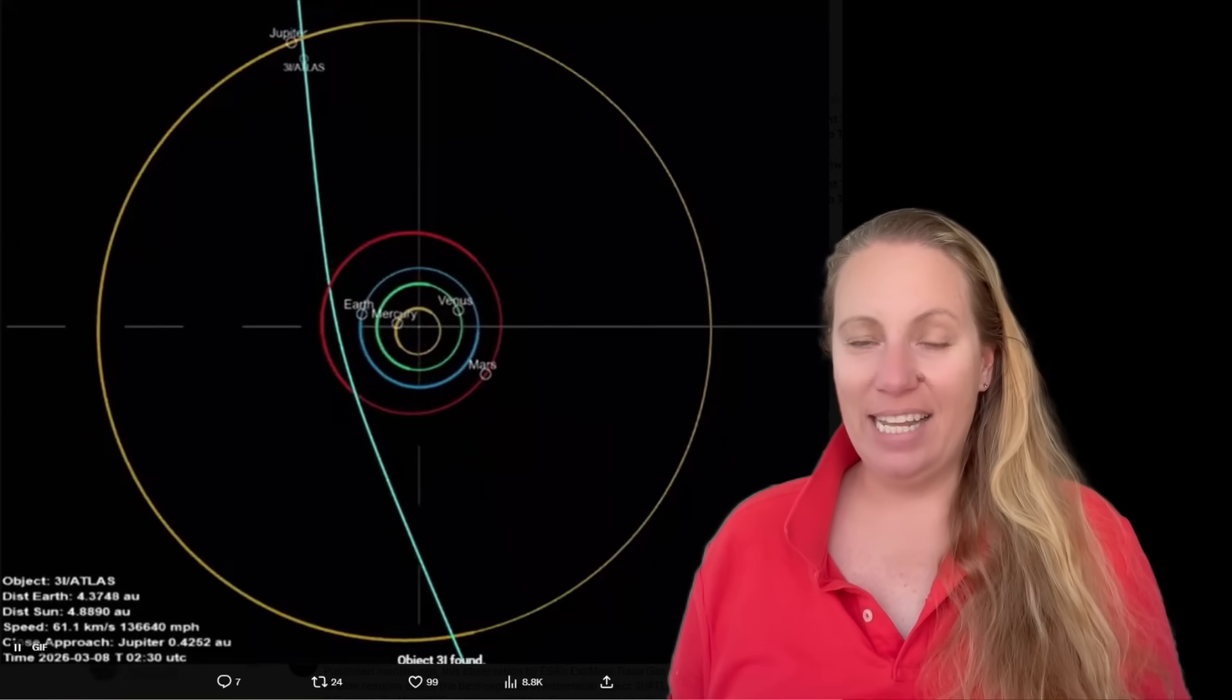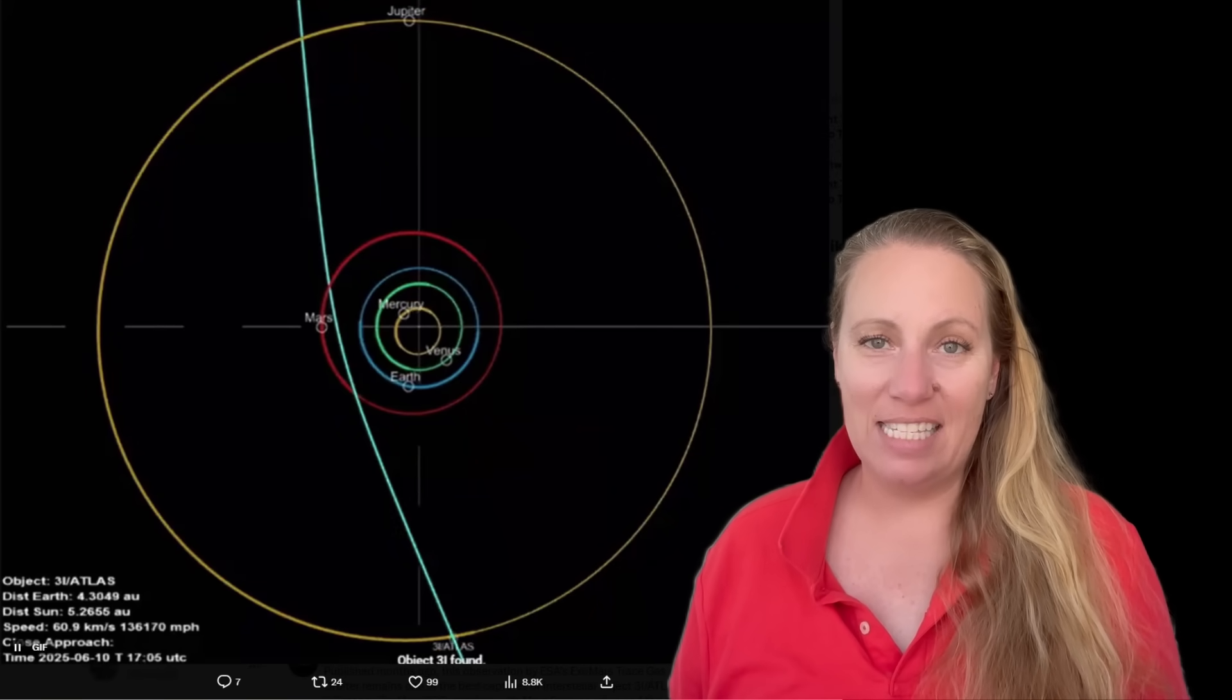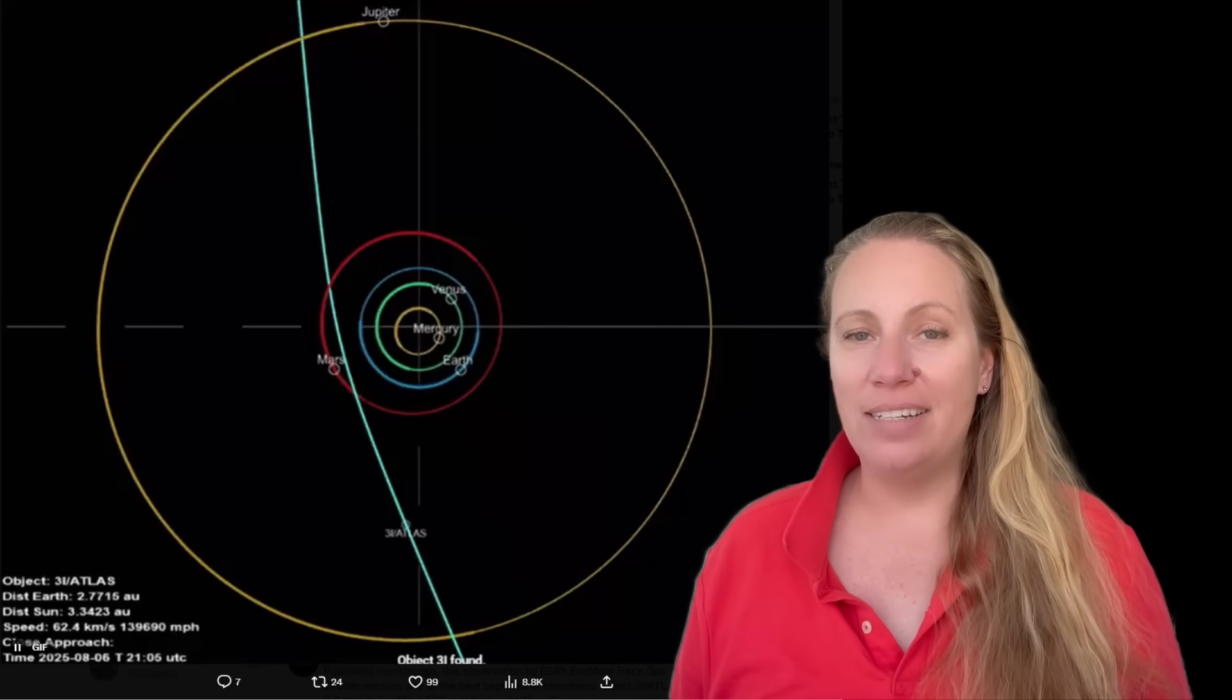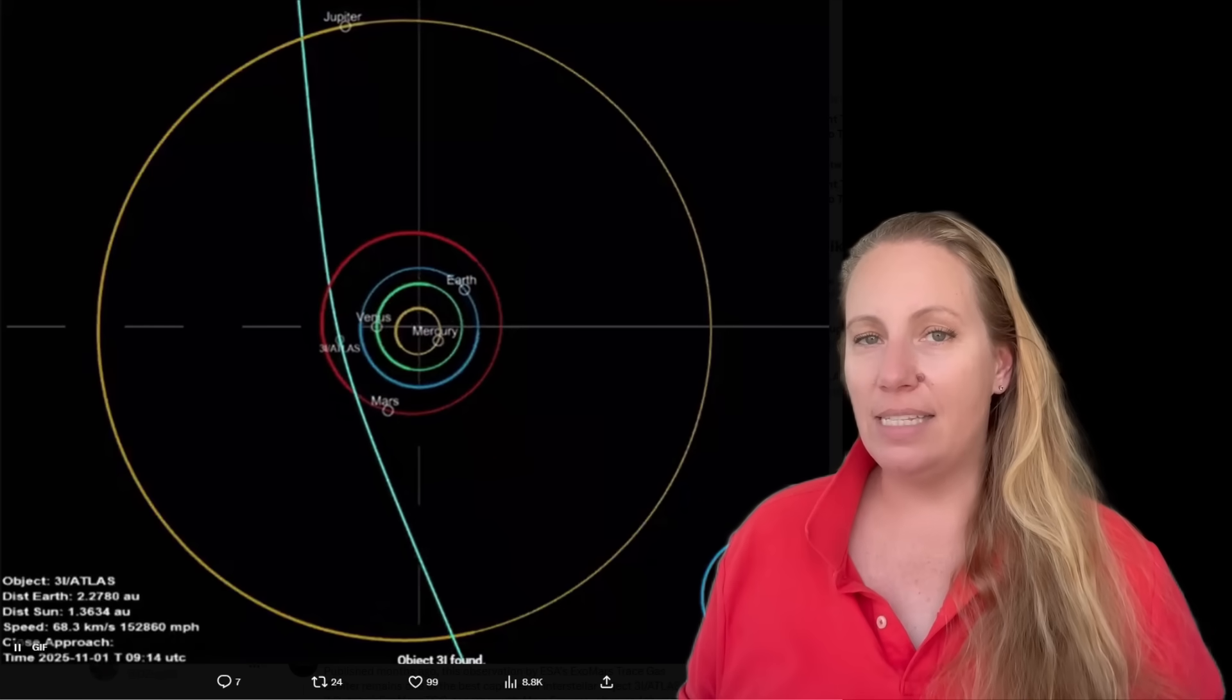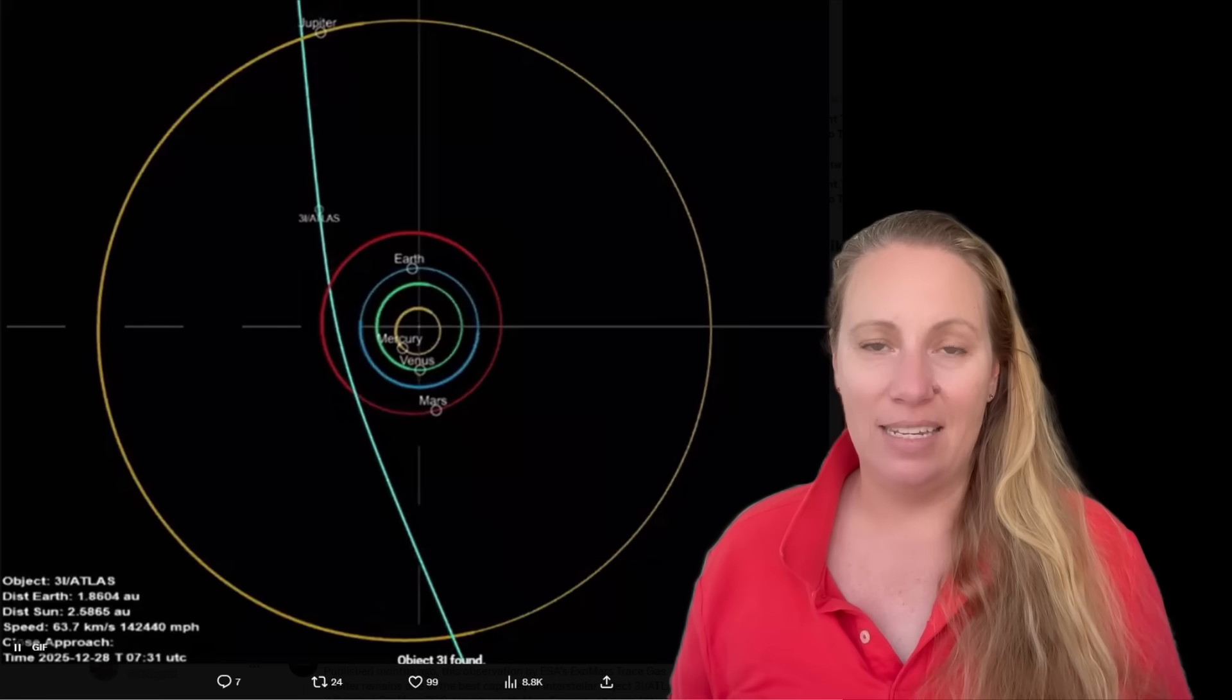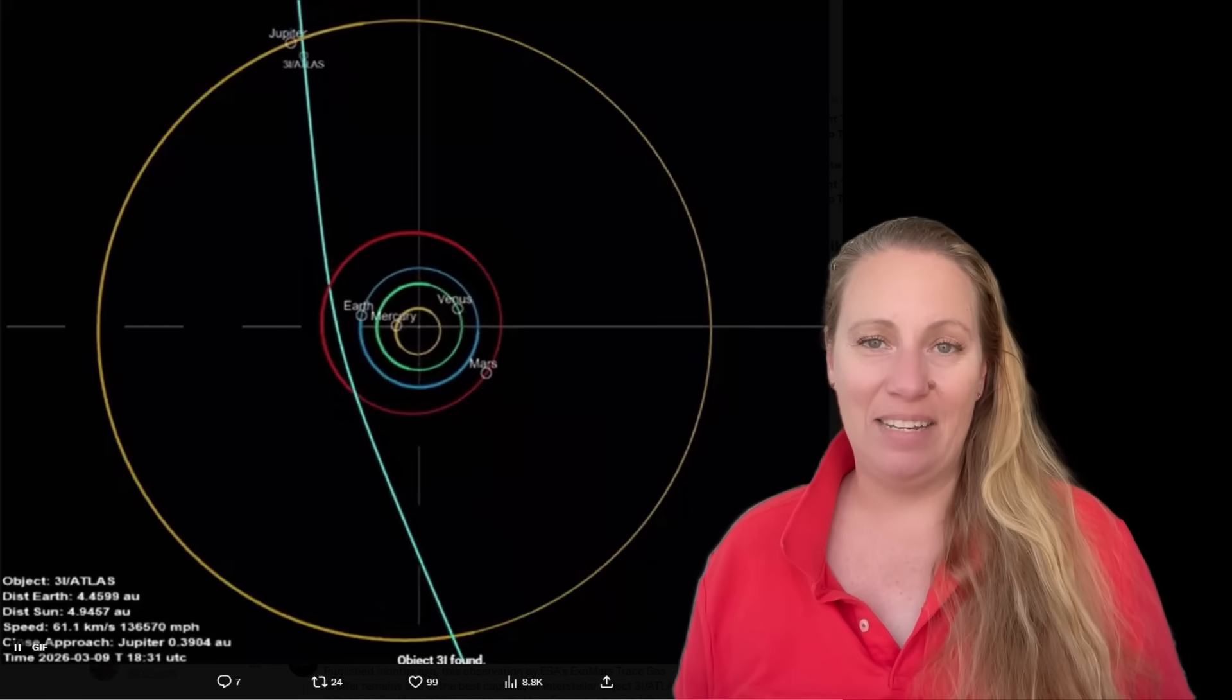Okay guys, 3i Atlas, this thing keeps hitting us with mysteries as it's getting to its closest point towards Earth on December 19th. The thing with this is we're discovering more anomalies and not the opposite, that we can cross some off the list. We can't. We just found another one. We just found number 16. Something new just dropped about 3i Atlas.